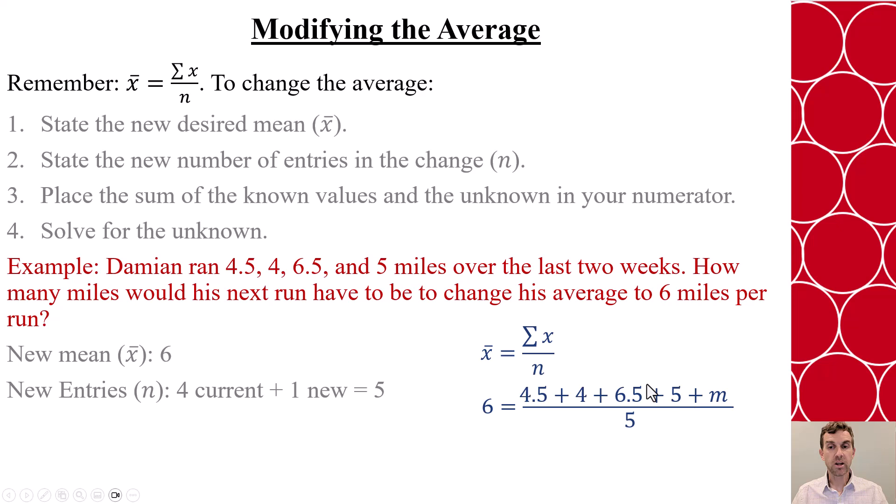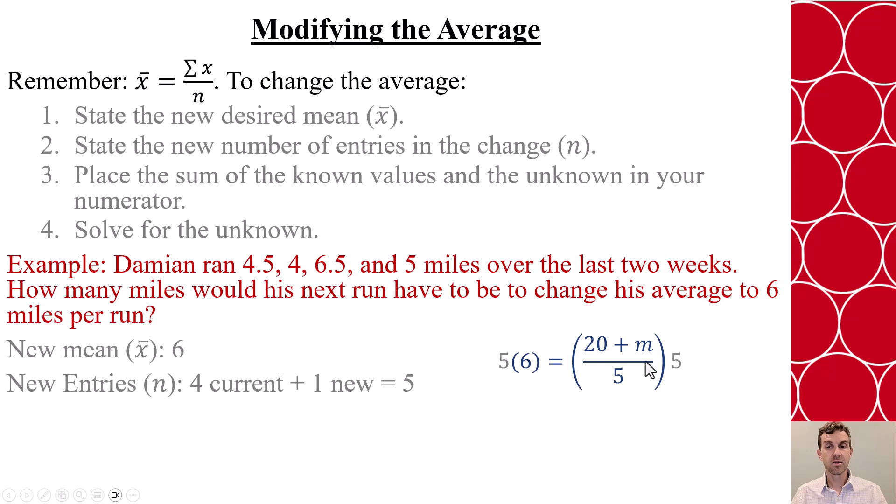Now let's solve this equation for m. So if I add my numerators together, I'm going to get 20 plus m, and now I'm going to multiply both sides by 5 to remove my denominator. So 5 divided by 5 becomes 1, leaving me with 30 equals 20 plus m. Now I can subtract 20 from both sides and be left with m equaling 10.